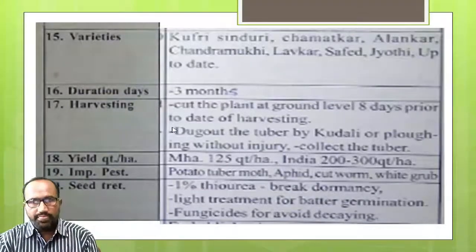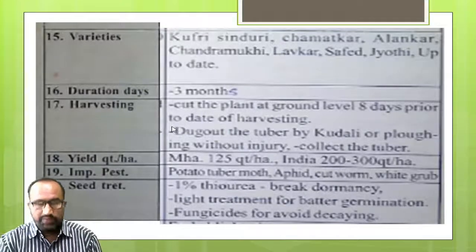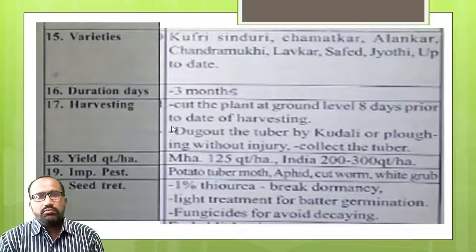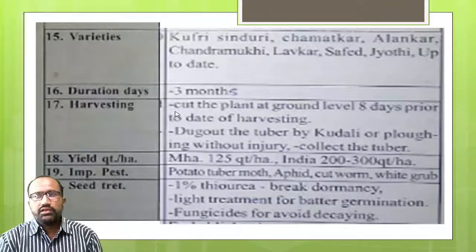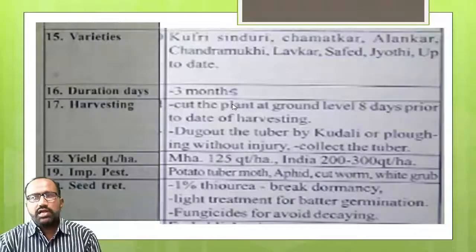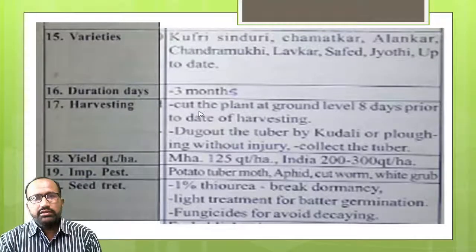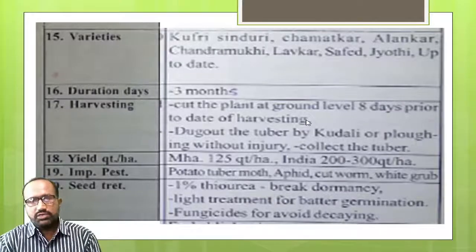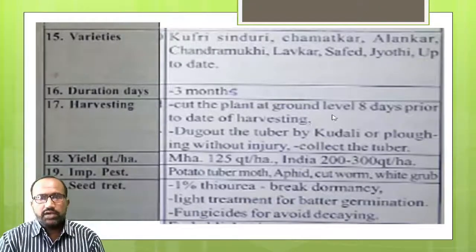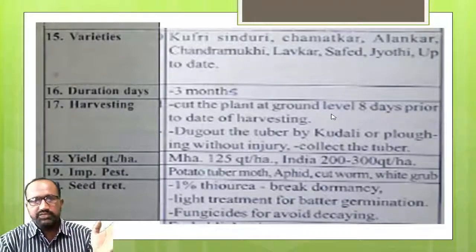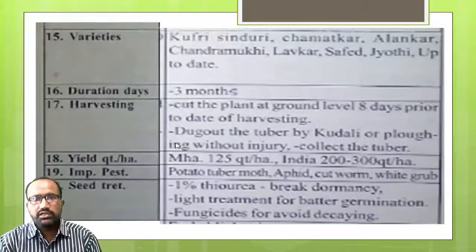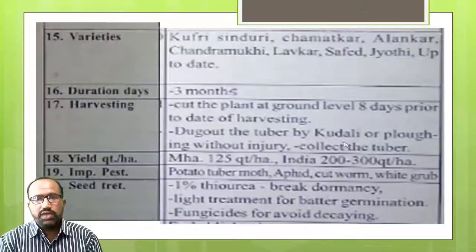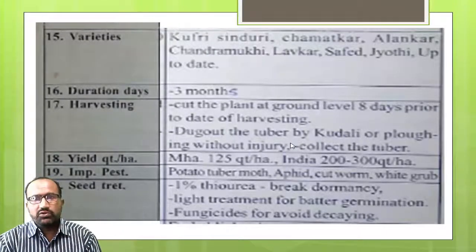The crop is ready for harvest depending upon the type of variety. Harvesting: cut down the plant at ground level 8 days before harvesting. Dig out the tubers using a kudali or by plowing without causing injury to the tubers.